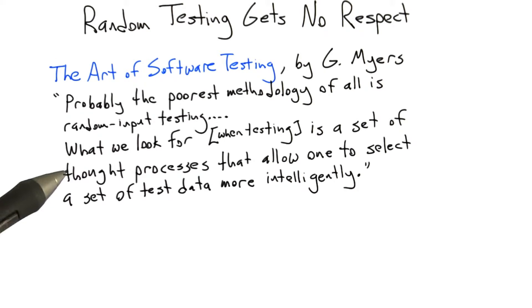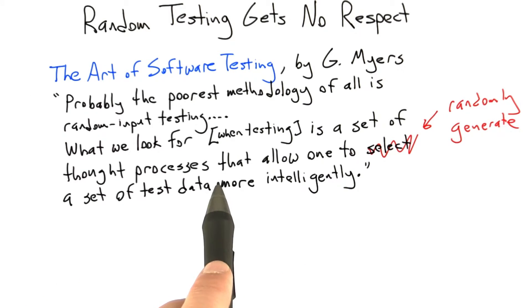So basically, what Myers is saying is random input testing is not a way that allows one to select test data intelligently. And so in my opinion, and this is after writing at least a dozen random testers, what he should have said is something like: what we look for when testing is a set of thought processes that allow one to randomly generate a set of test data more intelligently.